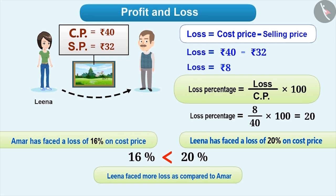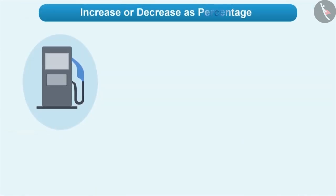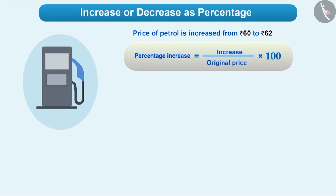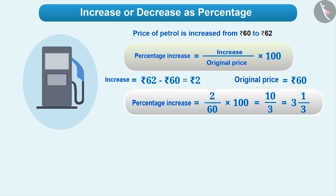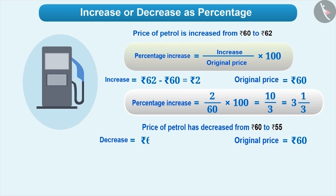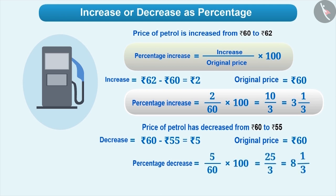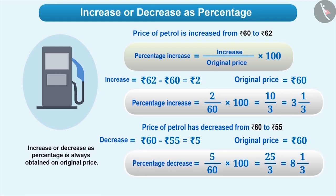Before ending this video, let's understand one more concept related to percentage. Increase or decrease of quantity can also be expressed in percentage. Let us suppose the price of petrol has increased from 60 rupees to 62 rupees. In such a situation, we can find the percentage increase as follows. Percentage increase is equal to increase by original price into 100. Here, 62 minus 60 is equal to 2 and original price is 60. Therefore, percentage increase is equal to 2 by 60 into 100, which is equal to 3 and 1 third. Similarly, suppose price of petrol has decreased from 60 to 55. Then the original price will be 60 and decrease is 60 minus 55, which is 5. So percentage decrease is 5 by 60 into 100, which is 8 and 1 third. Remember that increase or decrease as percentage is always obtained on the original price.